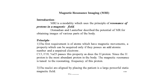Next is MRI — magnetic resonance imaging. MRI is a modality which uses the principle of resonance of protons in a magnetic field. Damadian and Lauterbur described the potential of MR for obtaining images of various parts of the body. The first requirement is atoms which have magnetic moments, a property acquired only if they possess an odd atomic number and unpaired electrons. C-13, F-19, and Na-23 possess this property, as does the H proton.